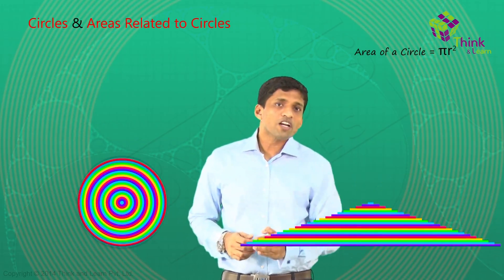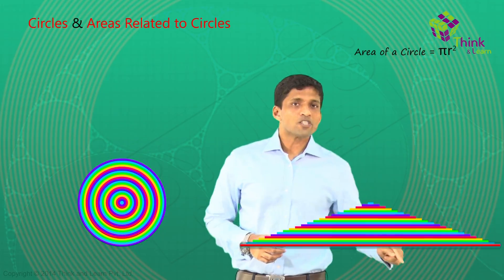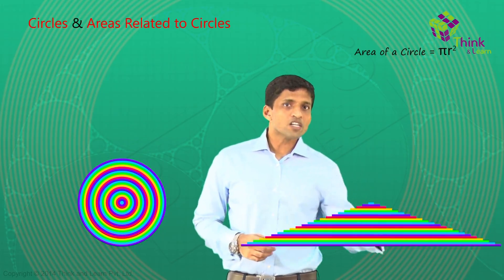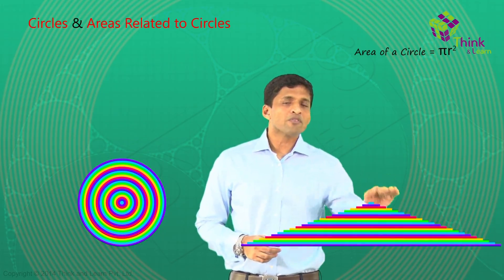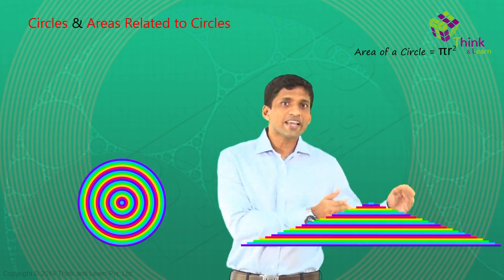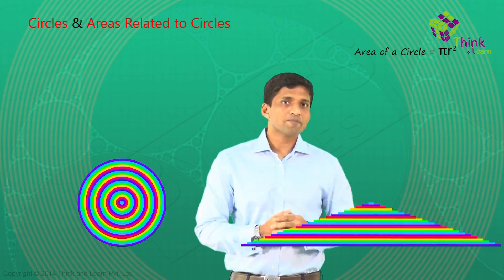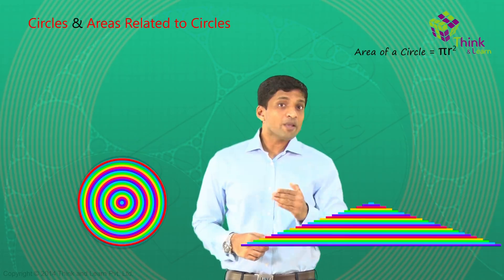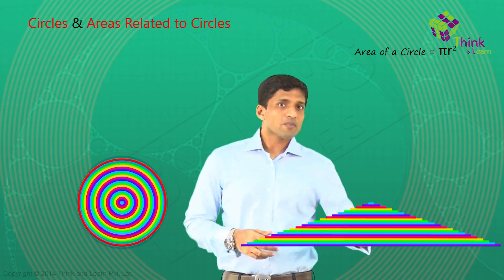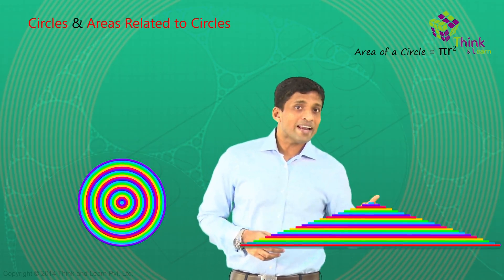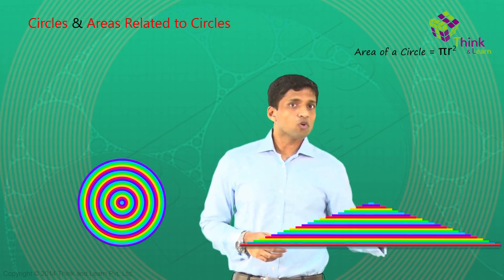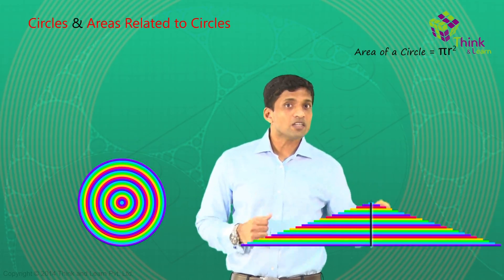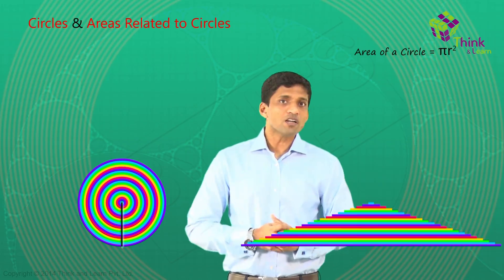The outermost circle will become the bottom line, as you can see. And all the other inner circles will come one above the other as lines, with decreasing length. The outermost circle's perimeter, if it is 2πR, then the bottom line length will be 2πR. And the height here will be nothing but the radius of the outermost circle.